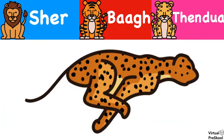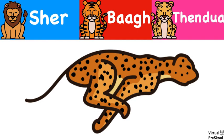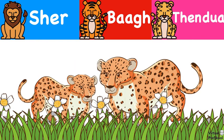And what do you see here? Shed, Baag, or Tindua? It's a Tindua, a leopard. And what do you see here? Shed, Baag, or Tindua? They are Tinduas, leopards. And it's a mama and her baby.